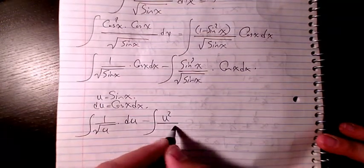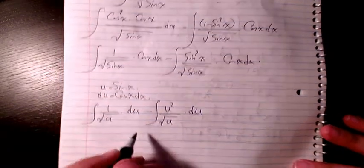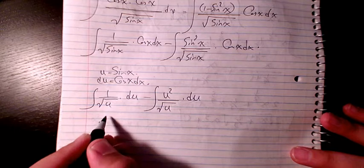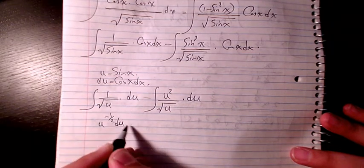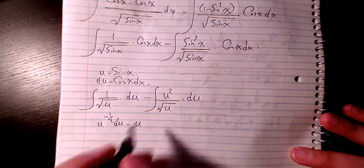Then I will have u to the power of negative 1/2 du, minus u to the power of 2 minus 1/2, which is 3/2, du.